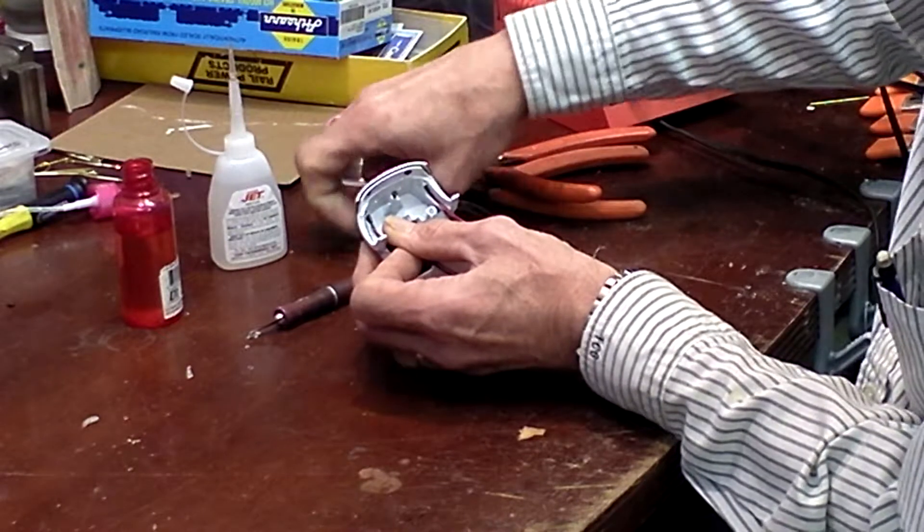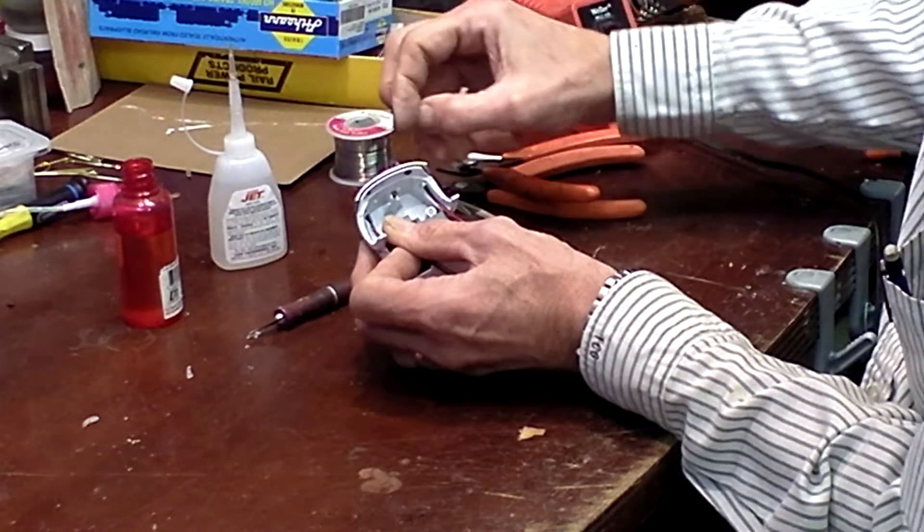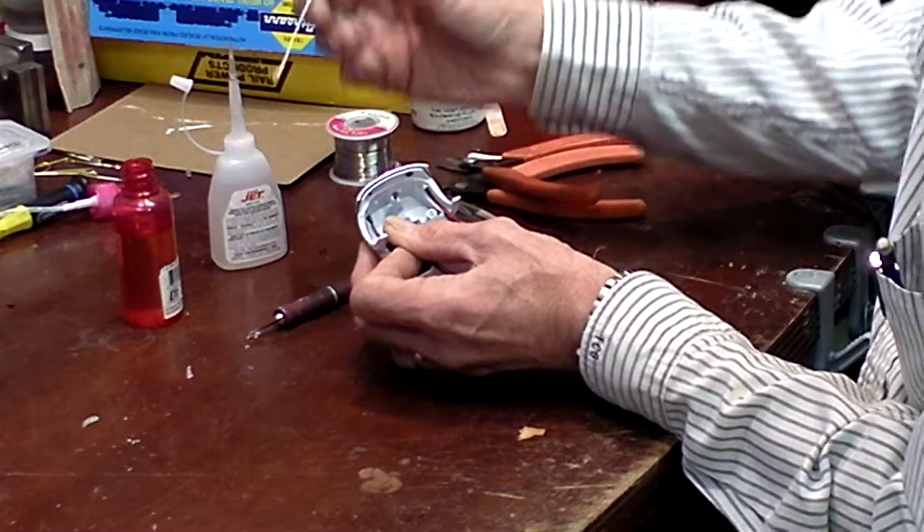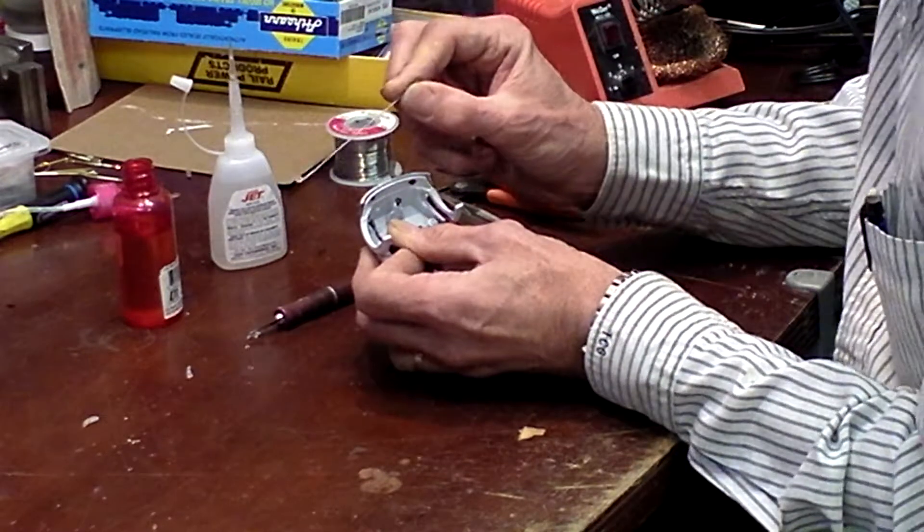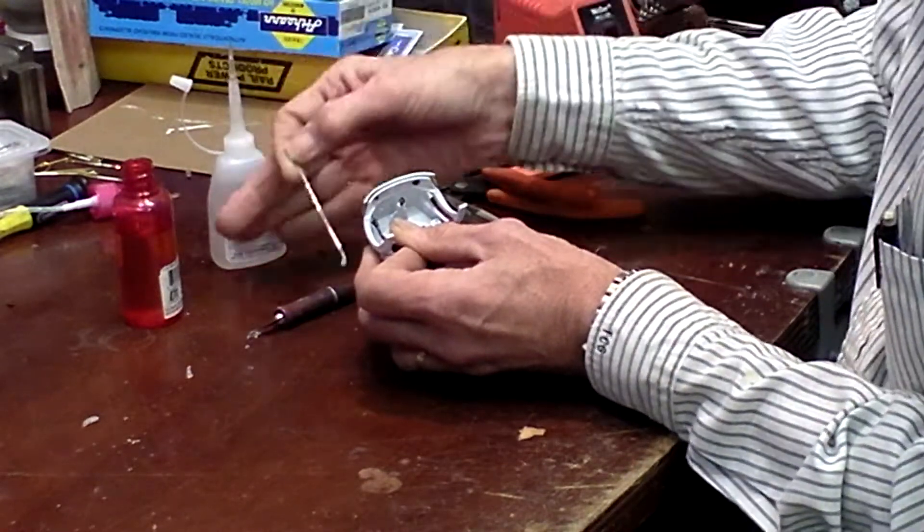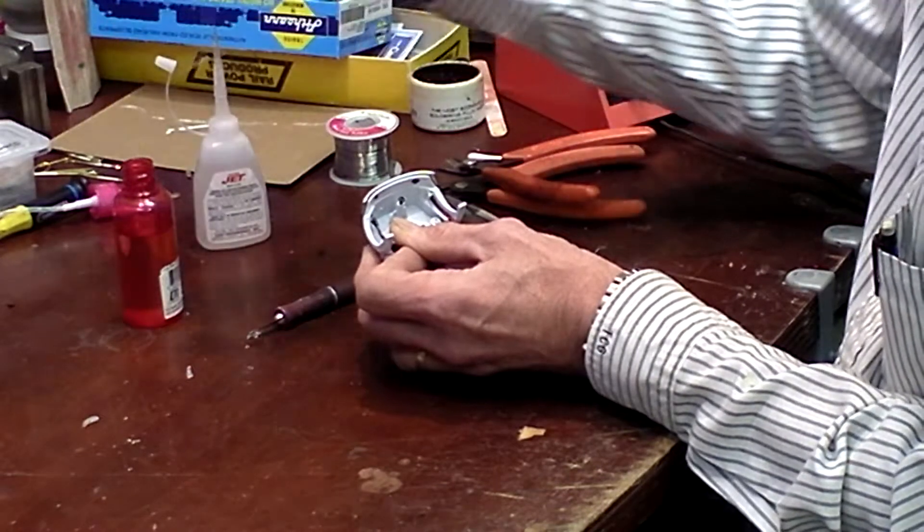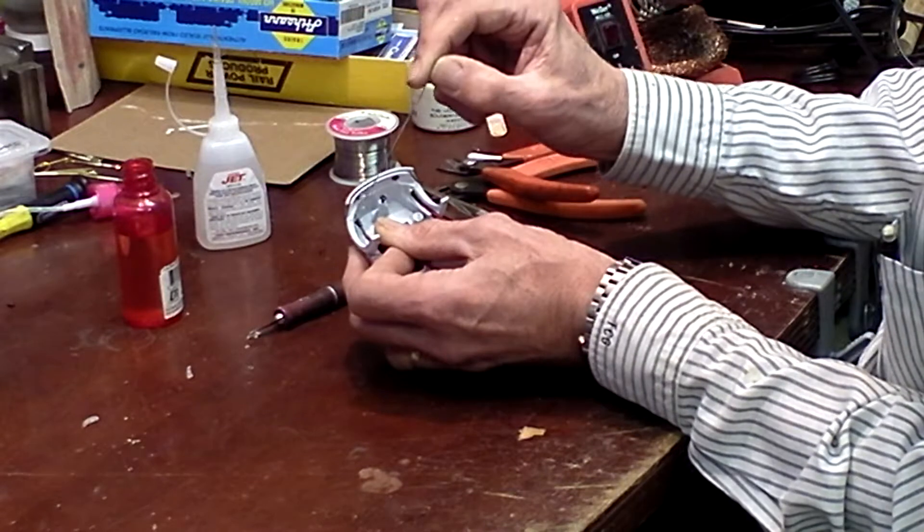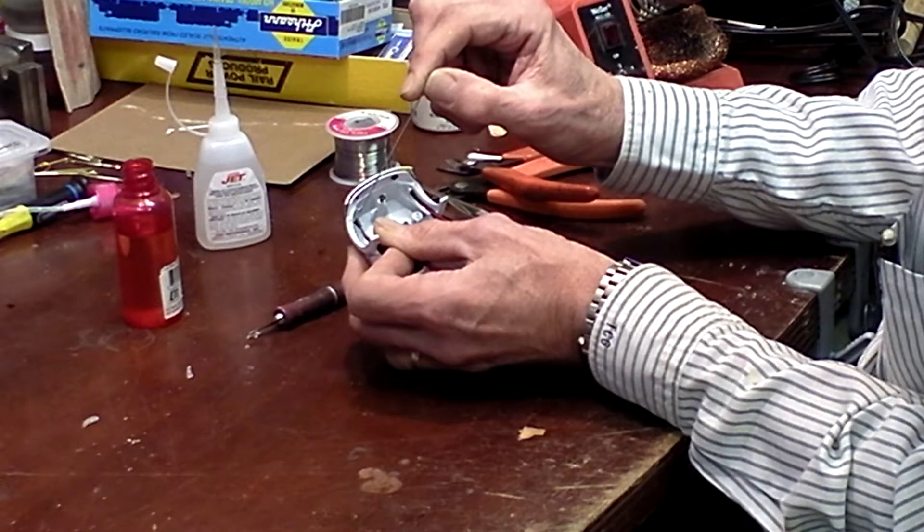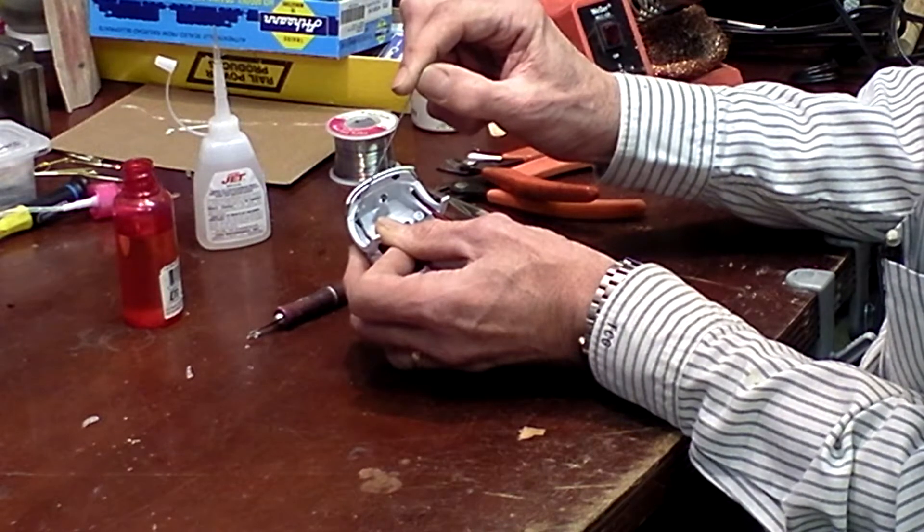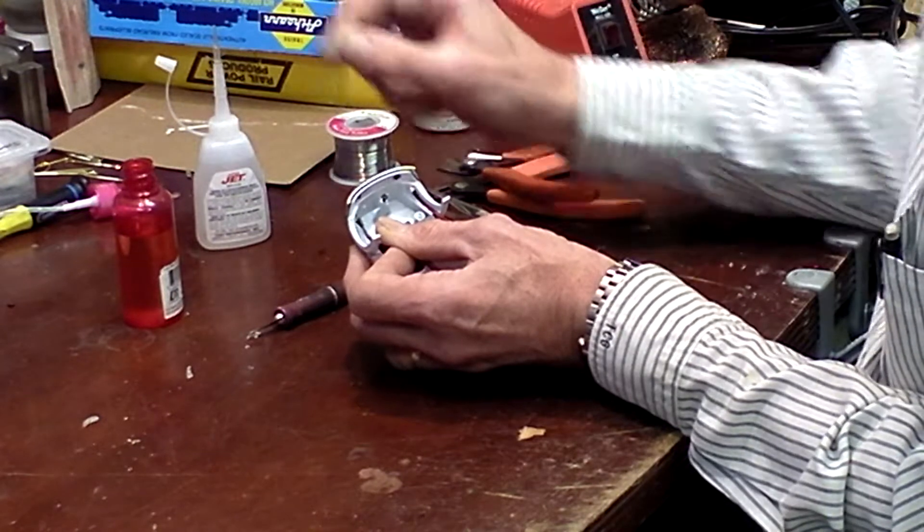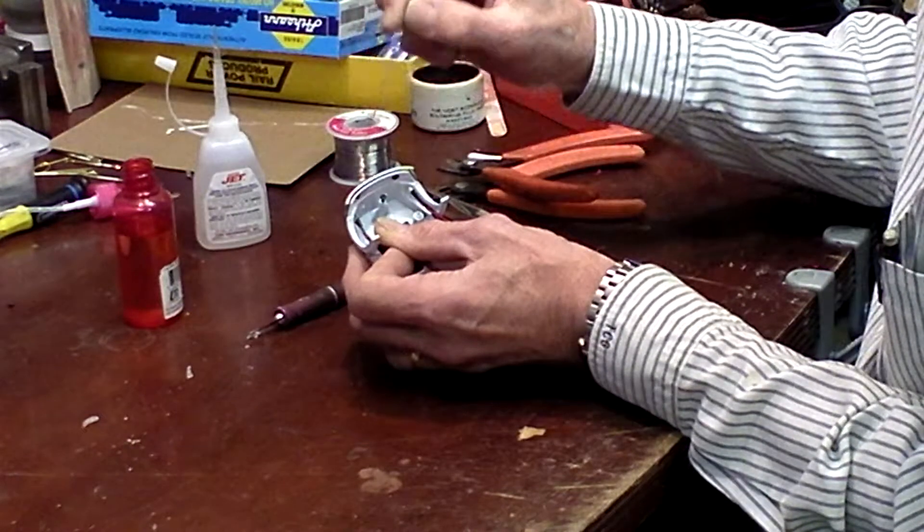Now what I do is I like to use accelerator. So what I did was I took a piece of wire and made a little loop on the end of the wire. Then I'll just drop this wire with the loop into my accelerator, and the loop holds just enough accelerator to get it on the glue.